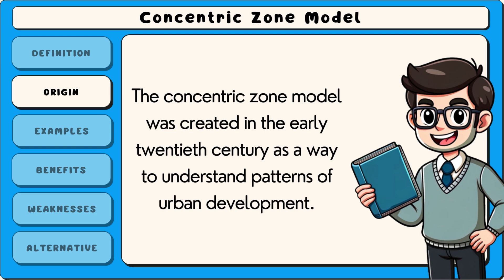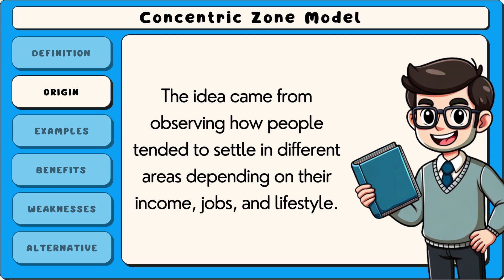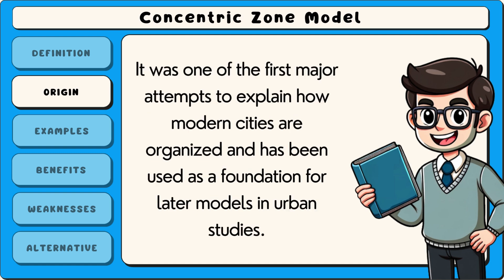The concentric zone model was created in the early 20th century as a way to understand patterns of urban development. It was based on studies of cities that were growing quickly during that time. The idea came from observing how people tended to settle in different areas depending on their income, jobs and lifestyle. The model helped explain why certain neighbourhoods were located close to the city centre while others were further away. It was one of the first major attempts to explain how modern cities are organised and has been used as a foundation for later models in urban studies.